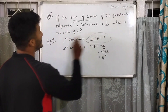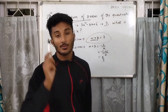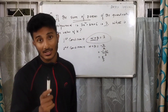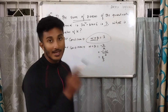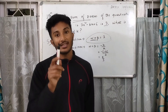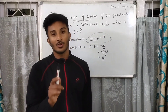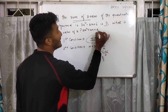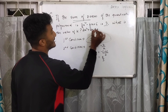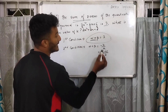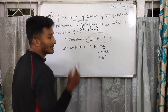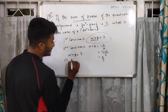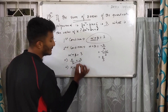We have to find the value of k. We know alpha plus beta equals minus b by a, and the product of zeros equals c by a. Comparing with the general form ax² + bx + c, here a = 3, b = −k, and c = 6. So alpha plus beta = −(−k)/3 = k/3. Since alpha plus beta = 3, we get k/3 = 3, so k = 9.